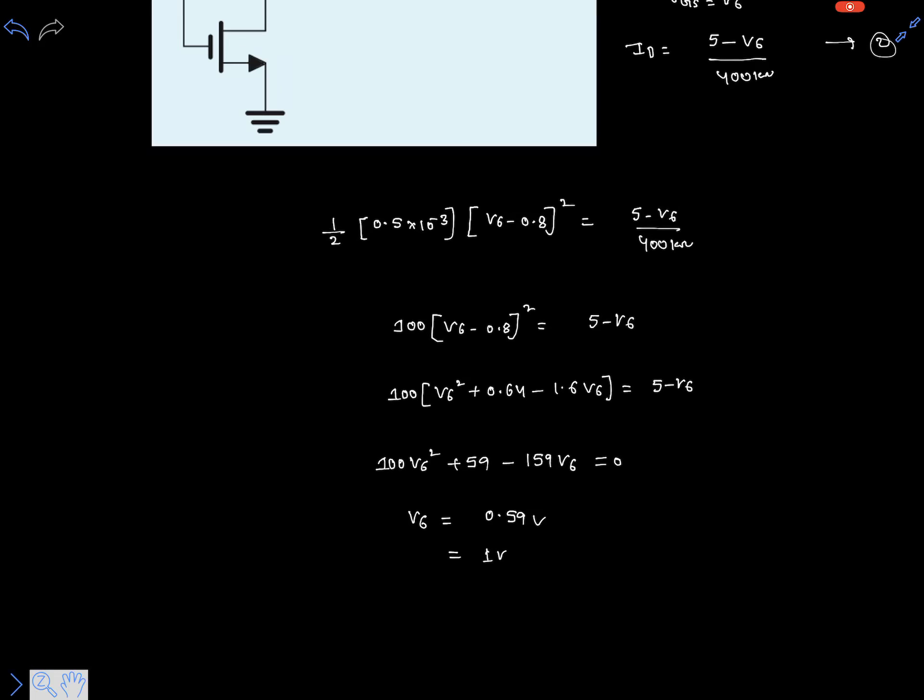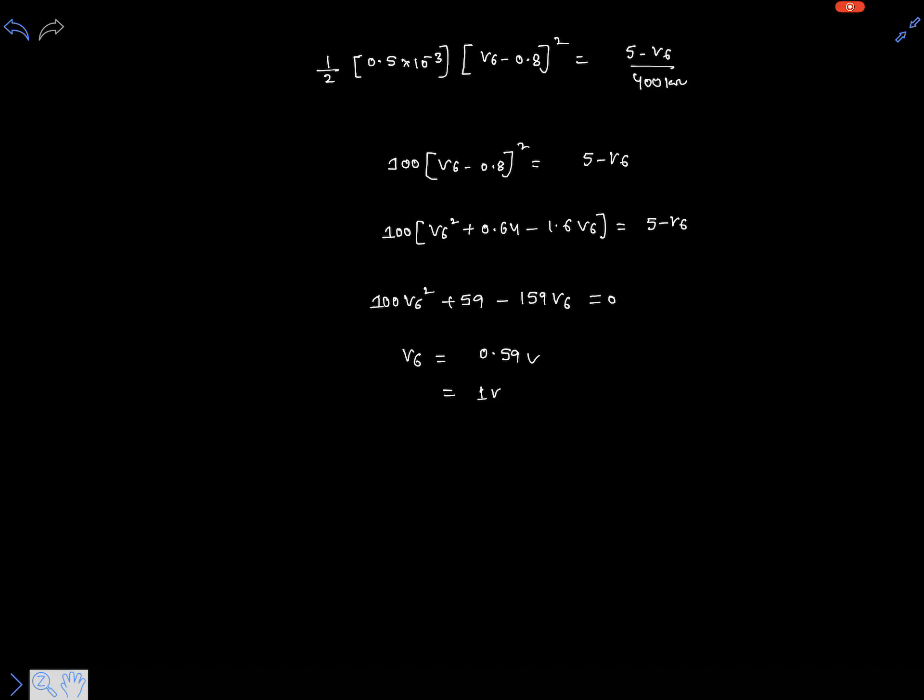However, V6 equals 0.59V cannot keep the saturation, cannot keep the MOSFET in saturation region, because VGS minus VT should be less than or equal to VDS. This is the only condition for saturation.